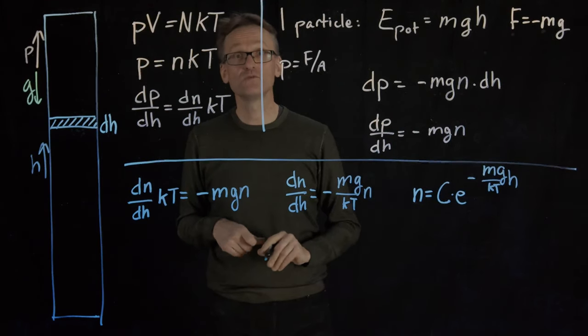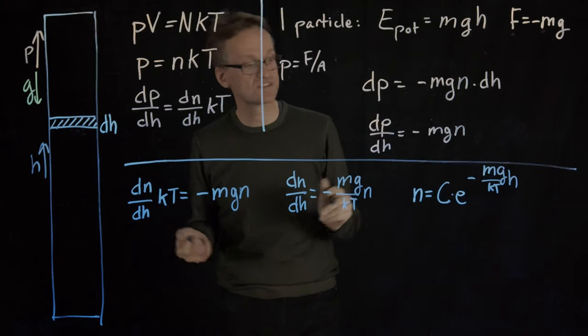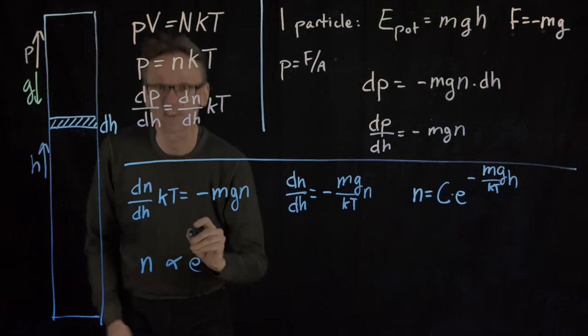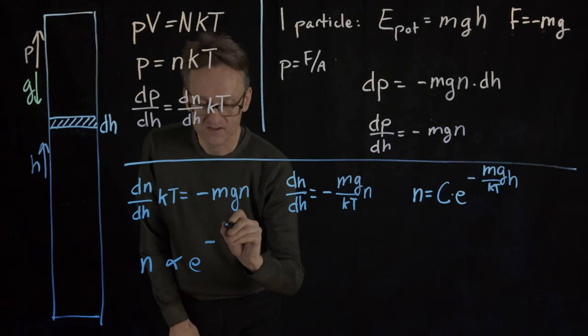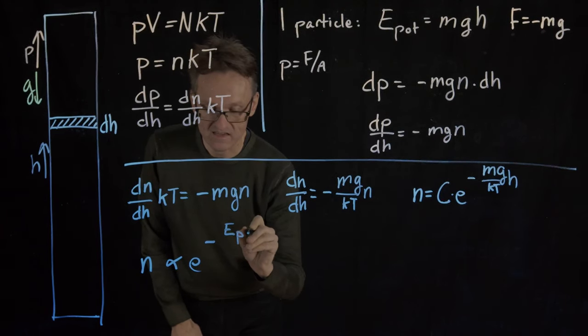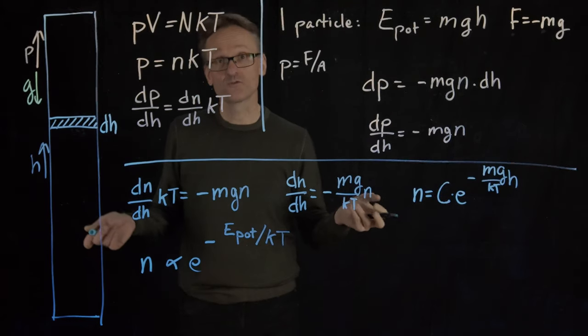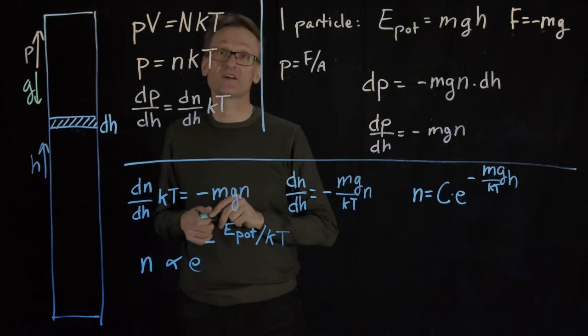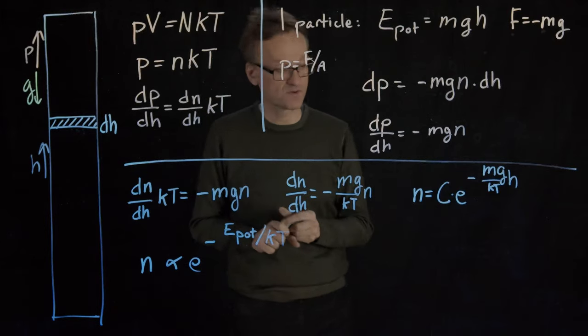And that is a beautiful result because if you now use the expression for the potential energy here, what does this say? Well this says that n is proportional to, and then I can get rid of my constant, e raised to minus E_pot divided by KT. So of course because it was a special case it's just the potential energy here, but that's the only energy I had. And that derives the Boltzmann distribution for this particular case.